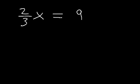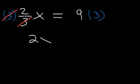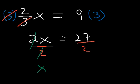Now what about a fraction? Let's say if you have 2 thirds x is equal to 9. How would you solve for x? Let's multiply both sides by 3. The 3s will cancel. On the left side, we have 2x. On the right side, 9 times 3 is 27. And then we could divide by 2. 2 divided by 2 is 1, so we have x on the left side. And on the right side, the answer is 27 over 2.